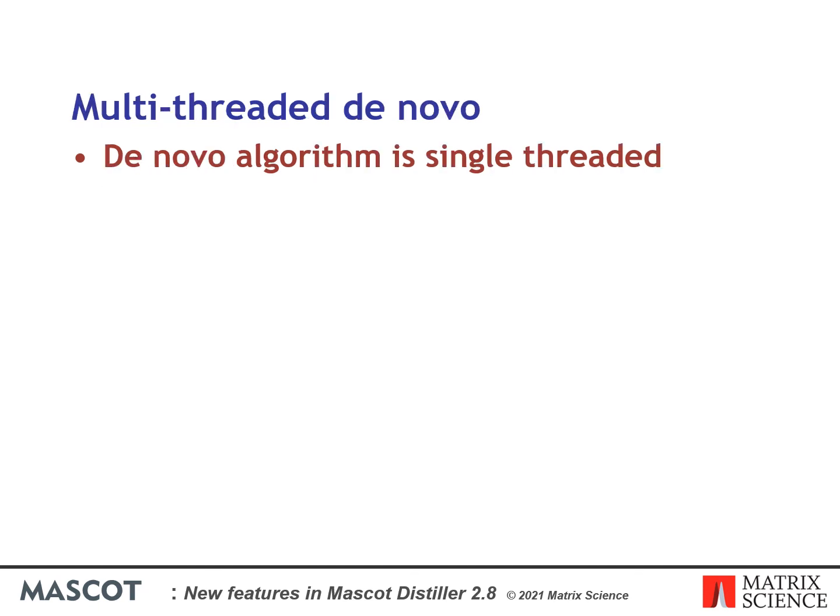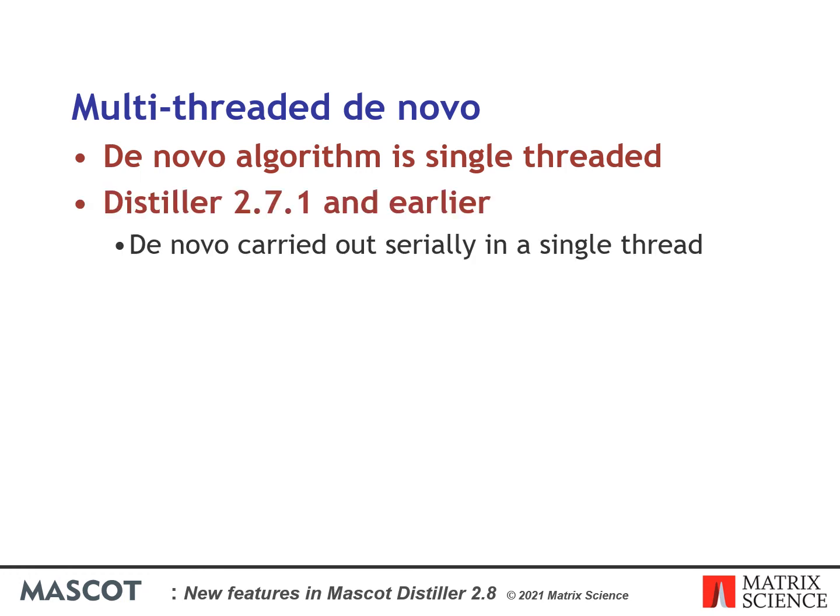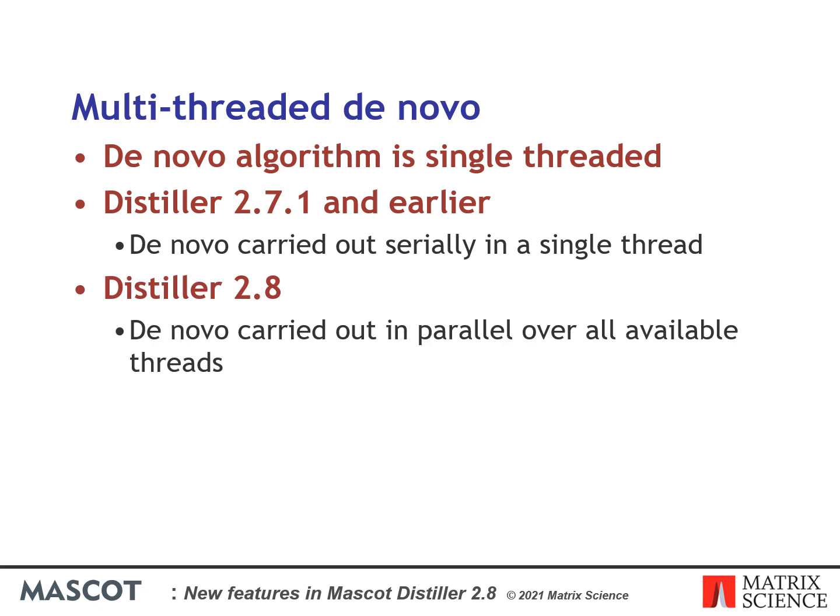Finally, we've made the de novo search feature in Distiller multi-threaded. The de novo algorithm itself is single-threaded — a single thread is used to process a peak list. In Distiller 2.7.1 and earlier, if you requested de novo on a range of peak lists, de novo was carried out serially in a single thread regardless of how many CPU cores were available. In Distiller 2.8, de novo is now carried out in parallel using all available threads, which can significantly improve performance if you're carrying out de novo on a large number of peak lists.